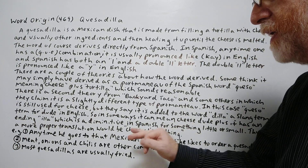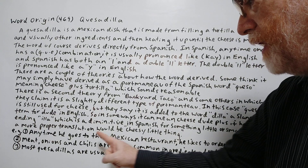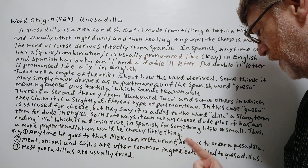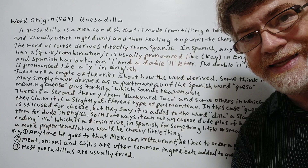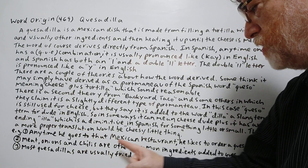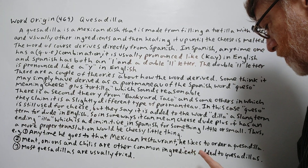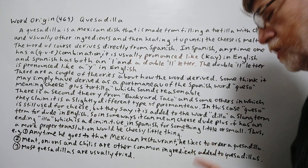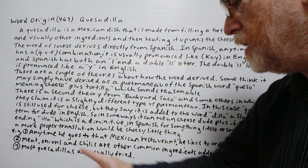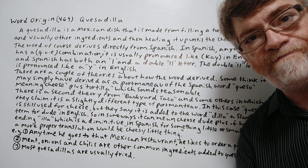We have three examples here to show how it's used. Number one: Anytime he goes to that Mexican restaurant, he likes to order a quesadilla. Number two: Meat, onions and chilies are other common ingredients added to quesadillas. Number three: Most quesadillas are usually fried.